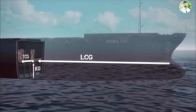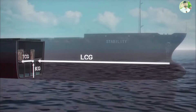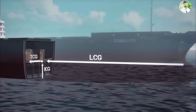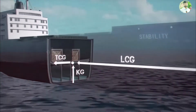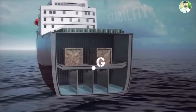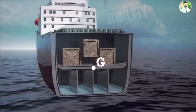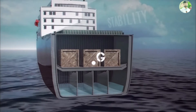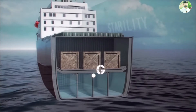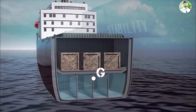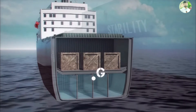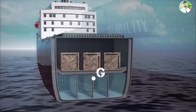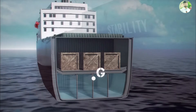Understanding where a vessel's center of gravity is located and how it moves is vital for ship's officers, because it is one property of ship's stability that they have the most control over. As cargo is loaded or ballasts are filled, the center of gravity moves accordingly. A well-trained officer's understanding of that principle will keep his vessel afloat in heavy weather.